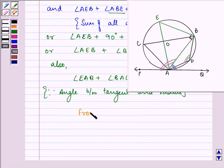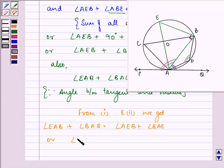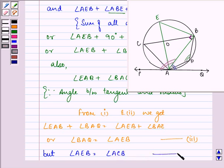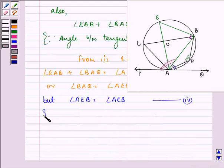From the first equation and the second equation, we get angle EAB plus angle BAQ is equal to angle AEB plus angle BAE. Or we can see that angle BAQ is therefore equal to angle AEB and let this be the third equation. But angle AEB is also equal to angle ACB as these are angles in the same segment.